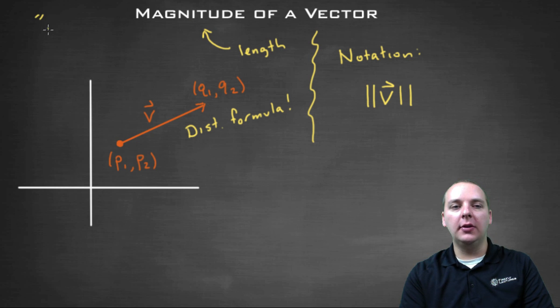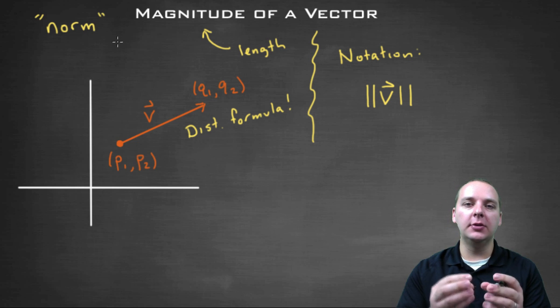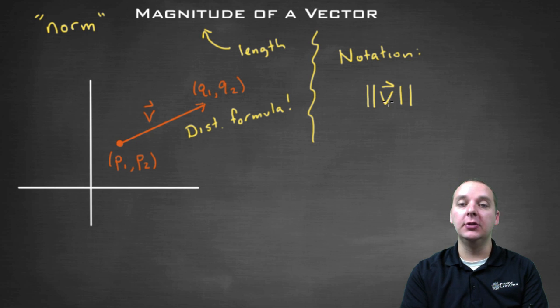A lot of times we'll call it the vector's norm, n-o-r-m. The norm of the vector. Any of these words mean the length of the vector, and that notation is using the double absolute value bars.